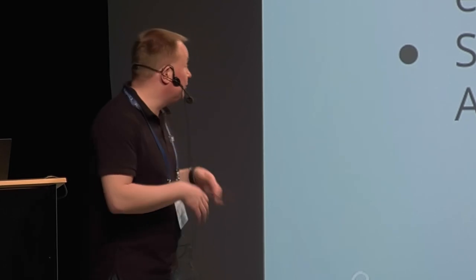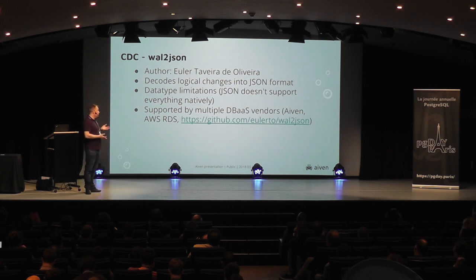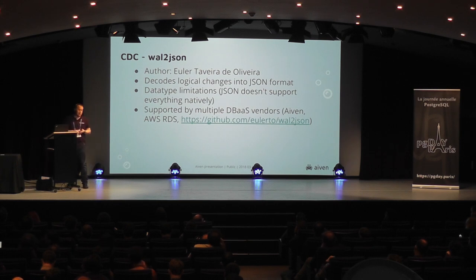One of the plugins for doing logical decoding is called wal2json. It's a fairly popular plugin that basically turns those changes into simple JSON objects. There are strict data type limitations on what it supports, partly because JSON doesn't have a data type for every possible Postgres data type — it's fairly limited in what it can store, but still pretty good for lots of different use cases. It's also supported by database-as-a-service vendors, which allows you to replicate your data away from different vendors if you need to.